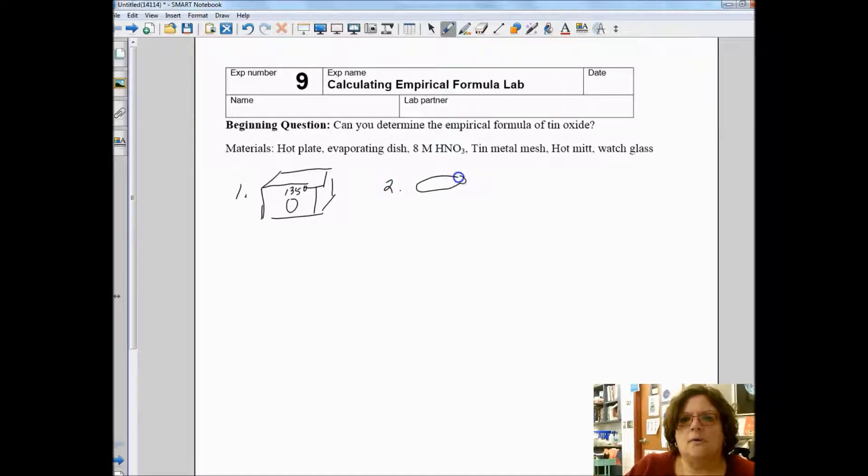This should probably be done for you already, but if it's not, you need to clean out the evaporating dish and then to dry it, you hold it using crucible tongs in a Bunsen burner.